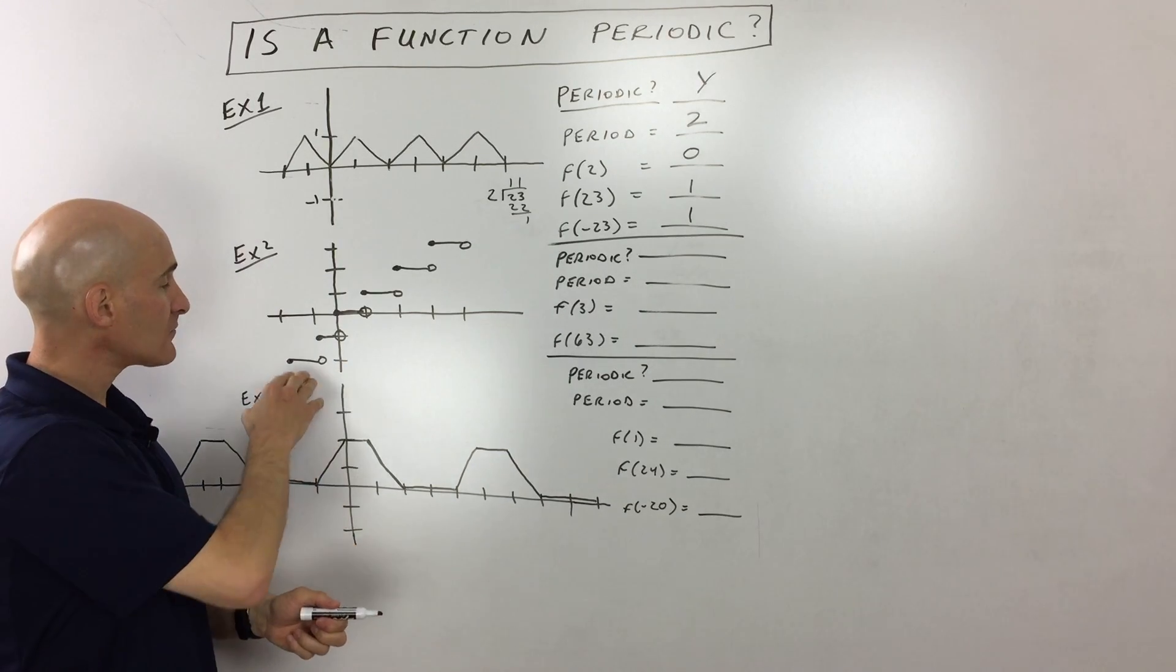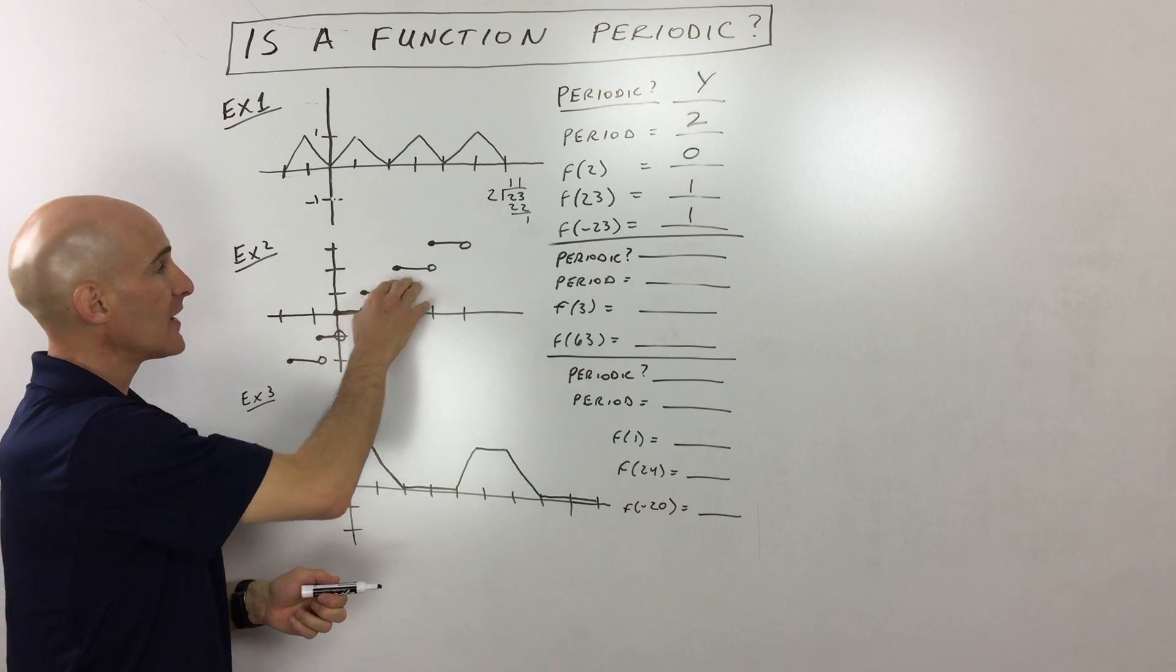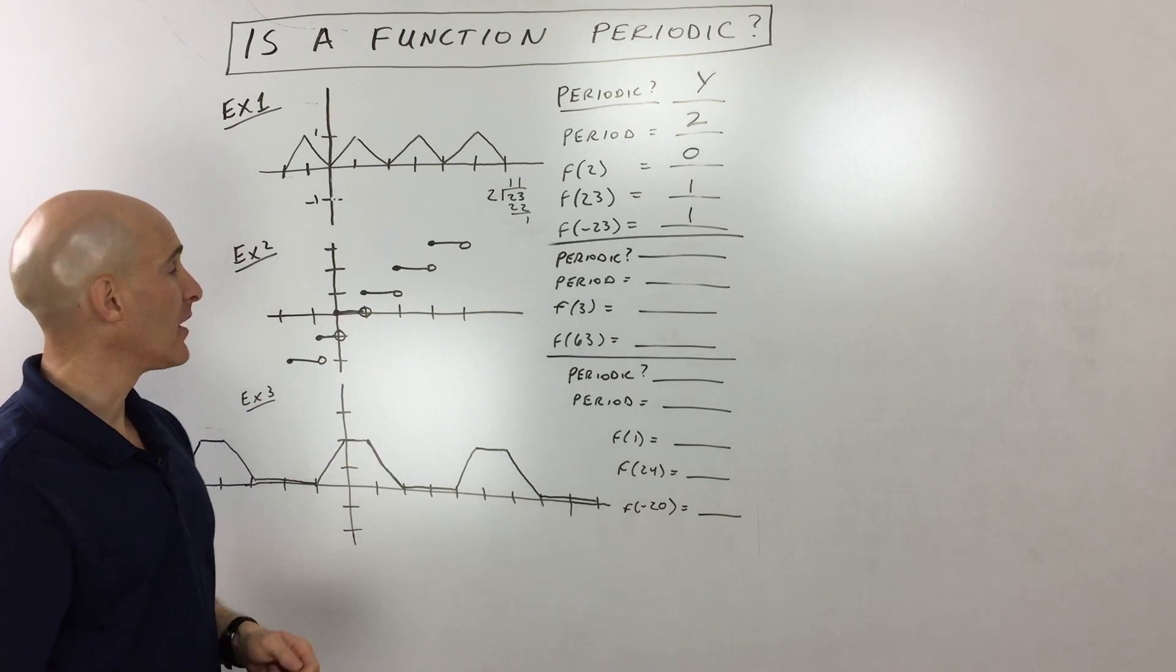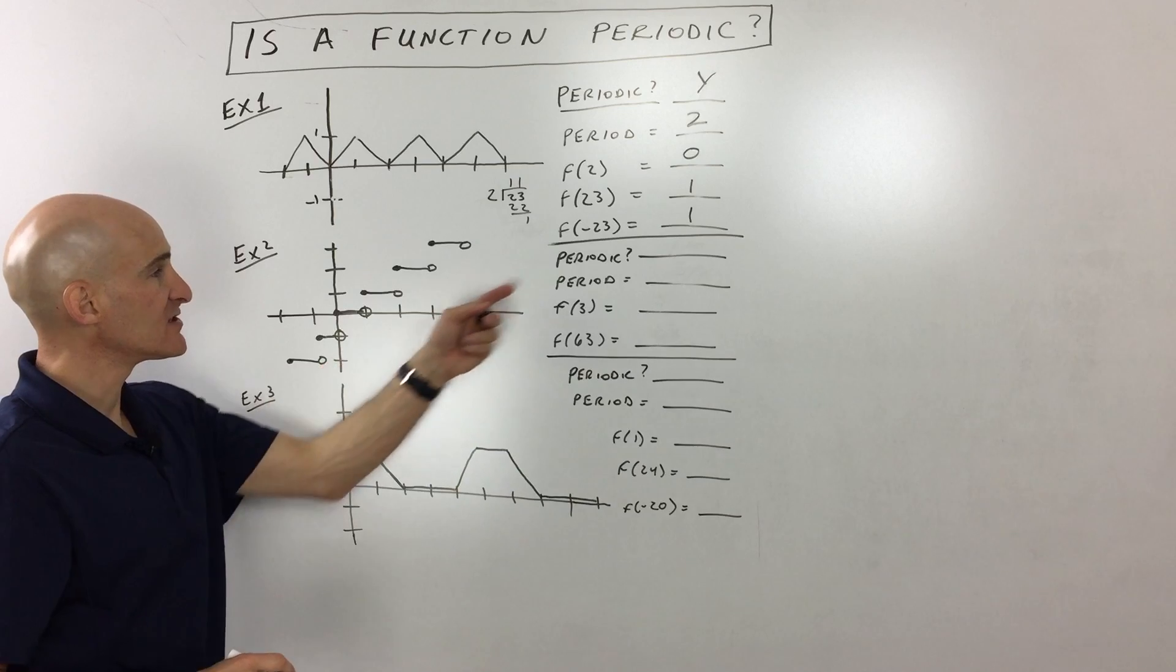So example number two, now you can see this stair-like pattern, this step-like graph. And the question is, is it periodic?